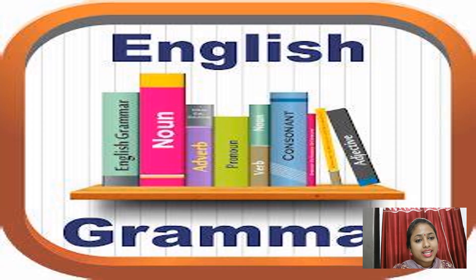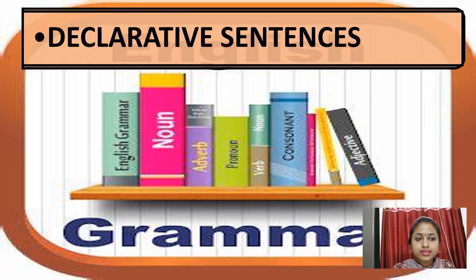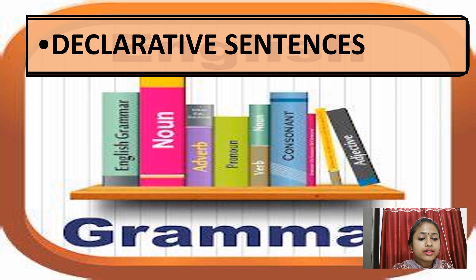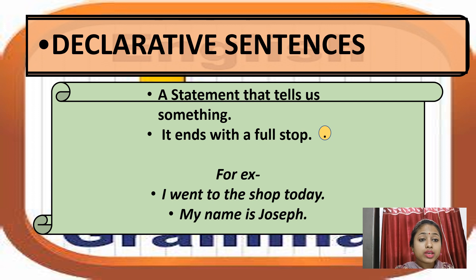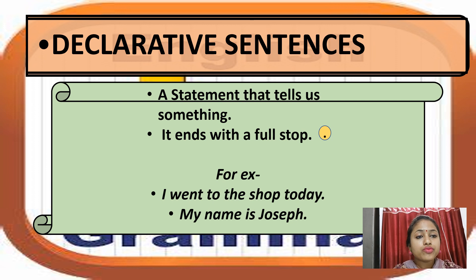Let's deal with declarative sentences, also known as assertive sentences. A declarative sentence is a statement that tells us something. It ends with a full stop. For example: 'I went to the shop today.' 'My name is Joseph.' Both are statements that tell you something and end with a full stop.